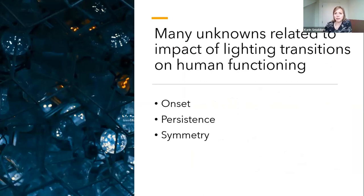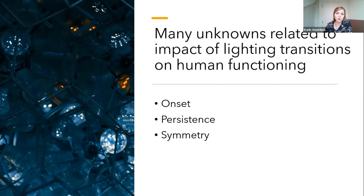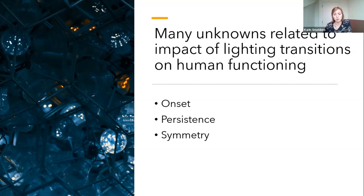Looking at the current literature, there are many unknowns related to the impact of light transitions on human functioning. First, related to the onset of effects — whether they occur immediately after changes in light settings or are more delayed. This may depend on the measurement employed. Second, the persistence of the effects — whether they are persistent or more transient. And in terms of symmetry, if you increase or decrease the light, it is rather unknown whether this gives similar magnitude but opposite responses, or whether one direction shows more pronounced modulations in sleepiness or sleep compared to another transition. Insights into onset, persistence, and symmetry are very informative for the development of dynamic lighting.